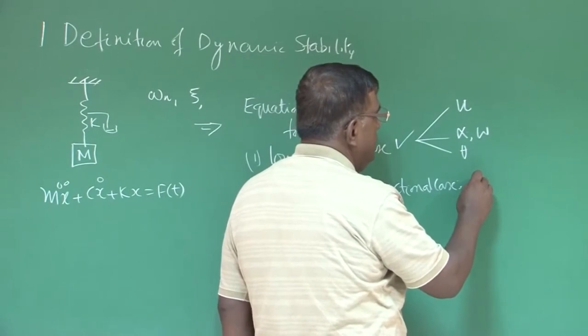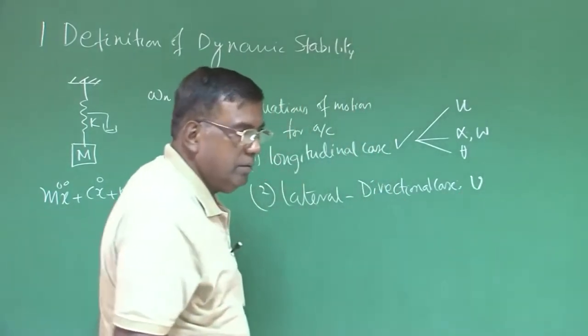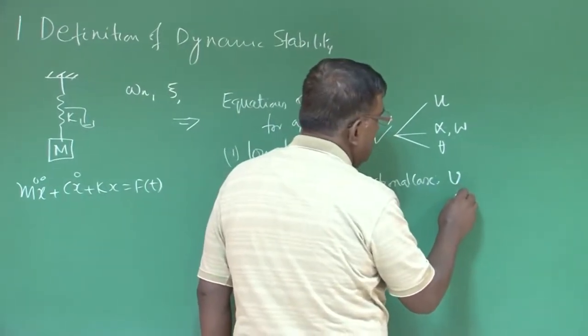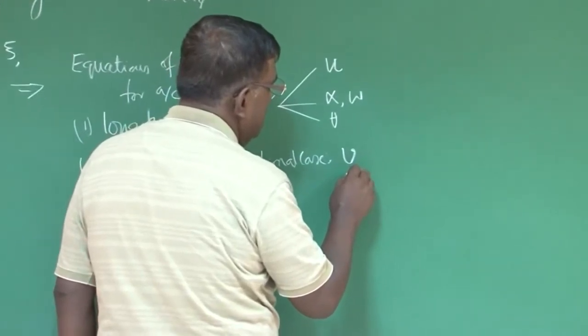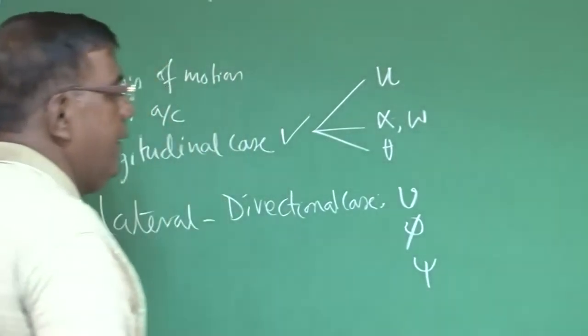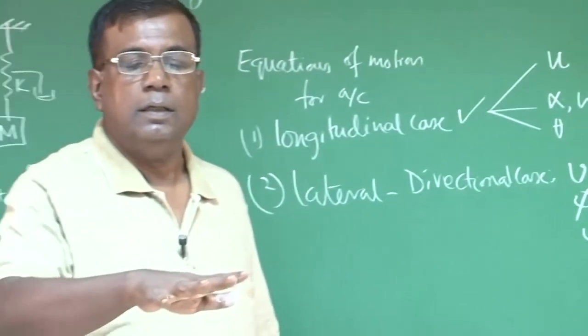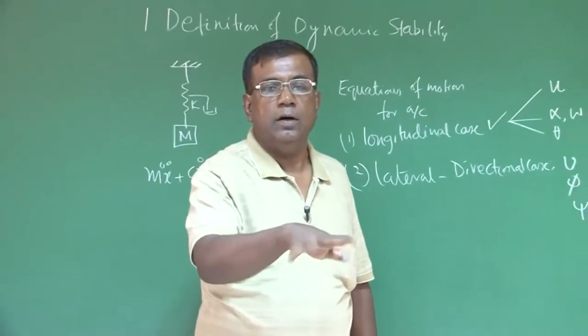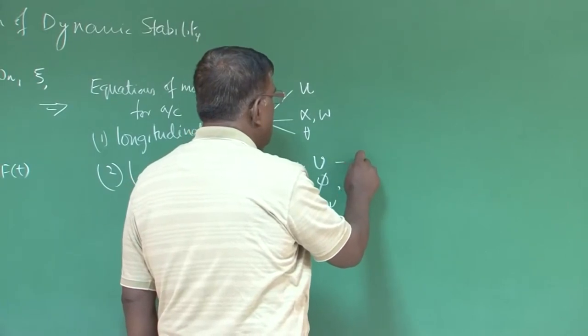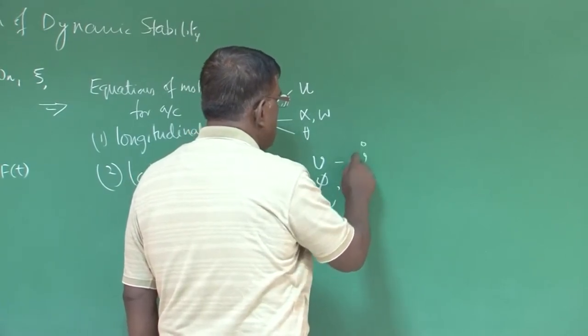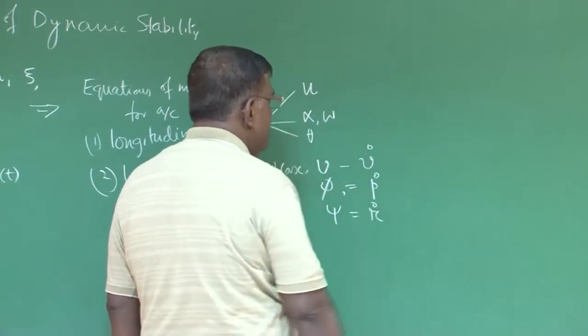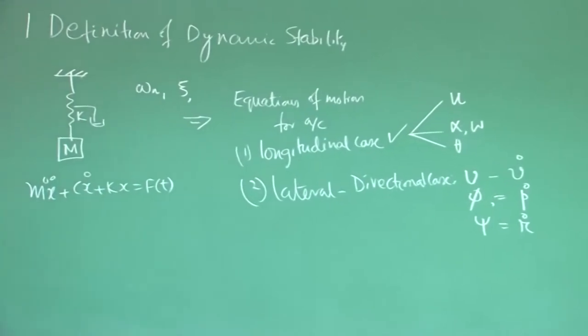And for lateral directional case, we talk about v small perturbation along y axis, then we have phi, we have psi - this and this yaw. But if you see in terms of equation of motion, we talked about v dot, we talked about p dot, we talked about r dot.